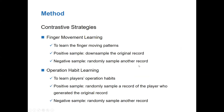To optimize our model in an unsupervised way, we introduce two contrastive strategies. The finger movement learning aims to learn finger moving patterns. The positive sample is generated by down-sampling the original record, and the negative sample is generated by randomly sampling another record. The operation habit learning aims to learn players' operation habits. The positive sample is generated by randomly sampling a record of the player who generated the original record, and the negative sample is generated by randomly sampling another record.